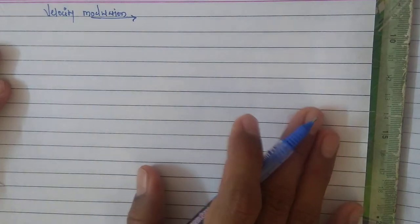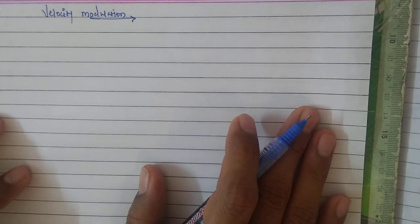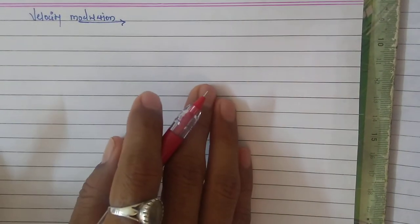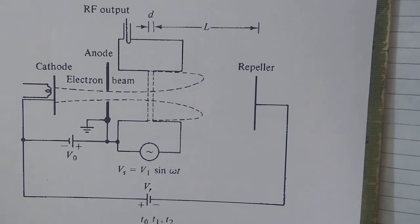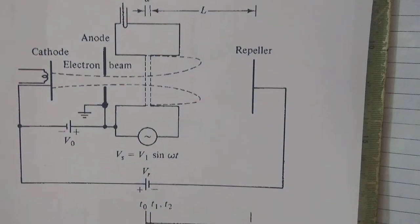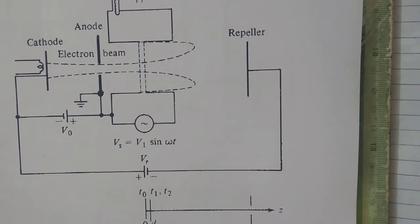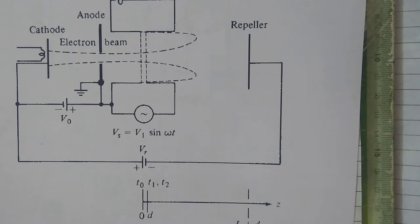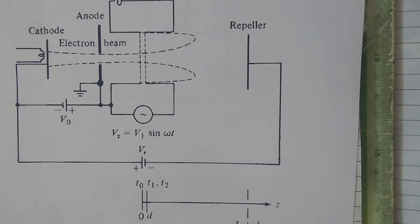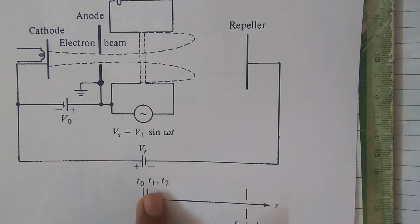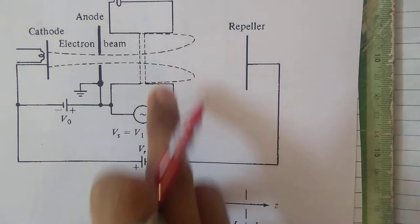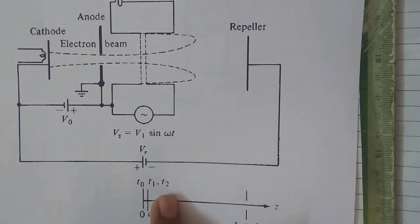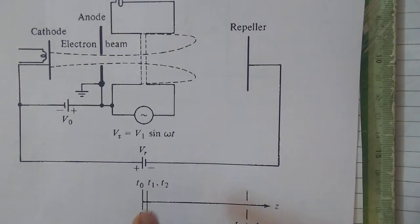The analysis of reflex klystron is actually similar to that of a two-cavity klystron tube. Considering this tube which we discussed in our last video: t0 is the time at which electrons enter the cavity gap, t1 is the time at which electrons come out of the cavity gap, and t2 is the time at which electrons come back to the cavity.